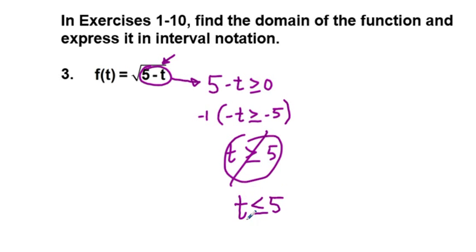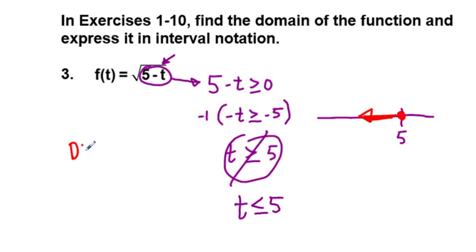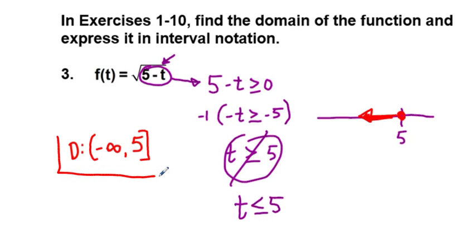So here we have an inequality notation that we can represent on a number line. At 5, since t is less than or equal to 5, we have a closed point, not an open point. In interval notation, the domain is from negative infinity all the way up to and including 5, written with a closing bracket: (-∞, 5]. That is the answer to number 3.